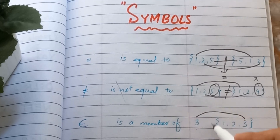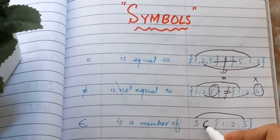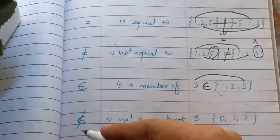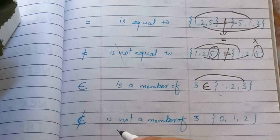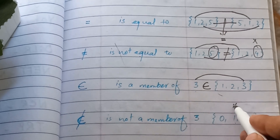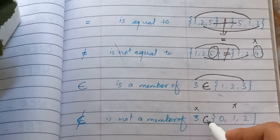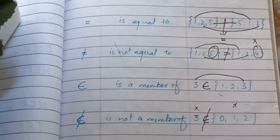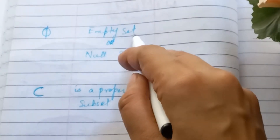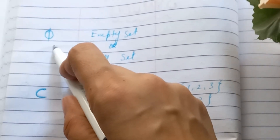The next symbol is 'is a member of' (∈). We check whether 3 is a member of a given set. If it is, we put the member of sign. 'Is not a member of' (∉) means 3 is not a member of the set {0, 1, 2}, so we put the 'is not a member' sign.